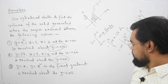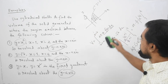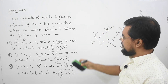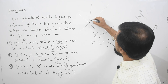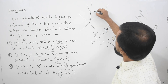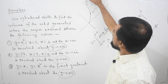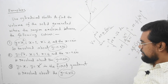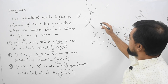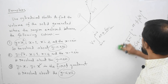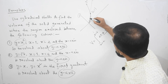For the third example, we revolve the region between y = x and y = x² about the y-axis. The graph shows these two curves intersecting at (0, 0) and (1, 1), with y = x above y = x² on the interval [0, 1]. Since we revolve about the y-axis, we use the same formula. Here the shell height will be the difference of the two curves.